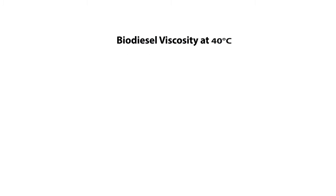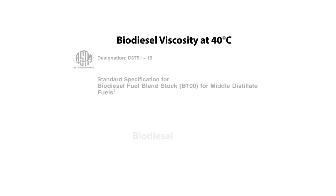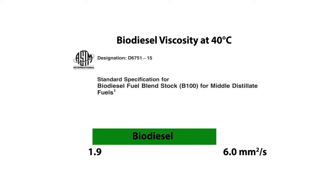The acceptable viscosity range for biodiesel according to ASTM D6751 is between 1.9 and 6.0 millimeters squared per second. The kinematic viscosity upper limit for biodiesel is higher than the upper limit for normal diesel fuel, which is 4.1 millimeters squared per second.